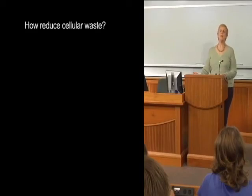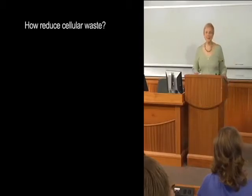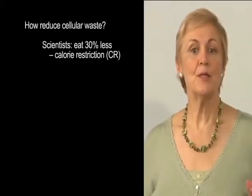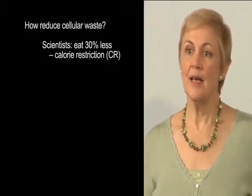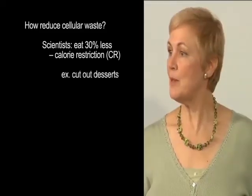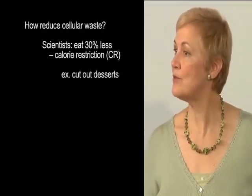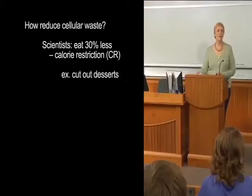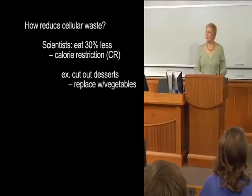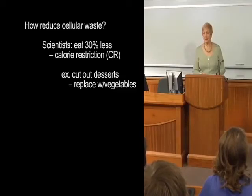Some scientists think they've found an effective way to do this: eat less, about 30% less. It's called calorie restriction, or CR. You cut out foods high in calories and low in nutrition, like those desserts we all love, and replace them with foods that are high in nutrition and low in calories, like fresh vegetables. Currently, CR is the only known way to consistently increase lifespan.